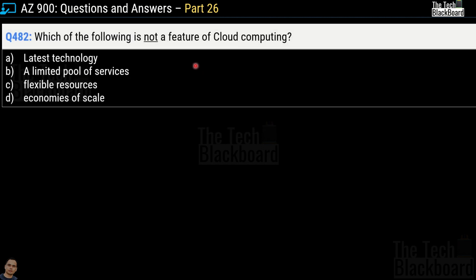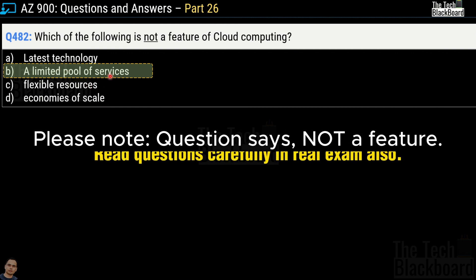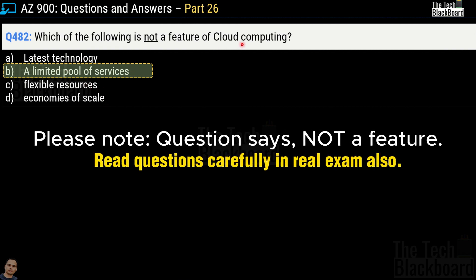Question number 482: which of the following is not a feature of cloud computing? Options are latest technology, a limited pool of services, flexible resources, and economics of scale. The correct answer is option B, a limited pool of services. When using cloud computing, you always have the latest technology, flexible resources and economics of scale, and virtually an unlimited pool of services. That's why option B is not a feature of cloud computing.